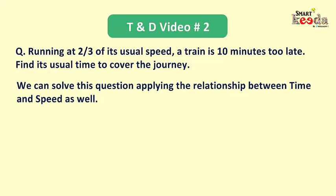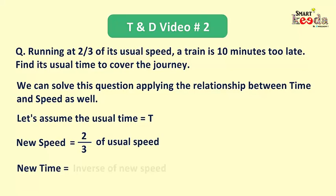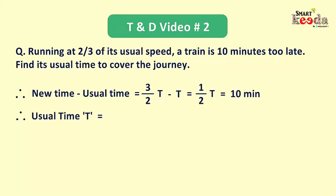Friends, we can also solve this question by applying the relationship between time and speed. Let's assume the usual time be t. As per the question, the new speed will be 2/3 of the usual speed. Therefore, the new time will be the inverse of the new speed ratio, equal to 3/2 of the usual time. The difference between the new time and the usual time is 3/2 t minus t, which equals 1/2 t, and that equals 10 minutes as given. Therefore, the usual time is 2 times 10, which equals 20 minutes, and that's the answer.